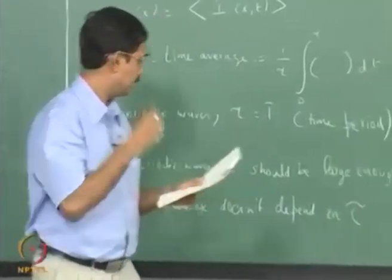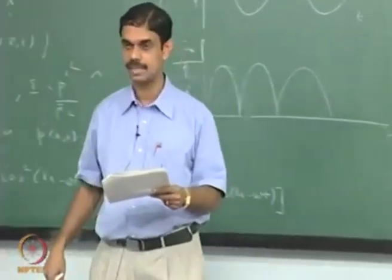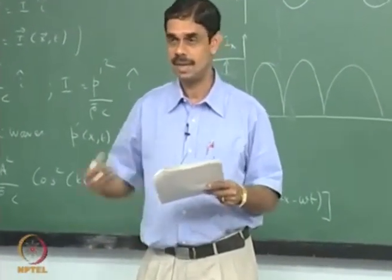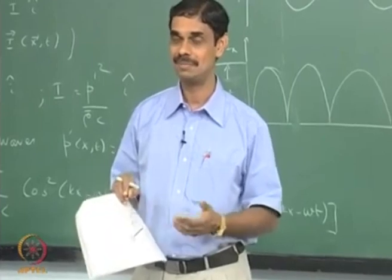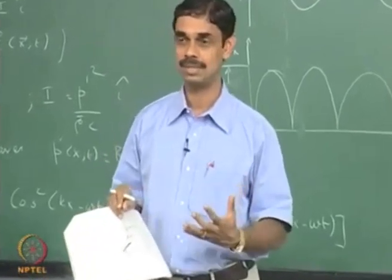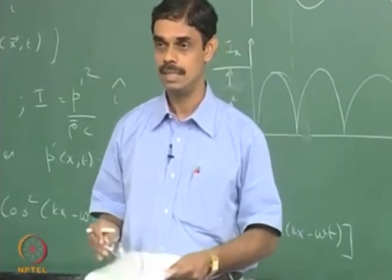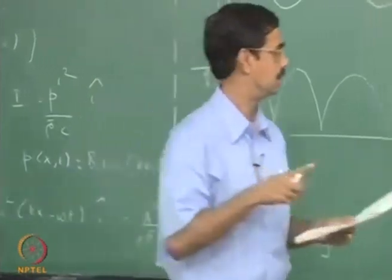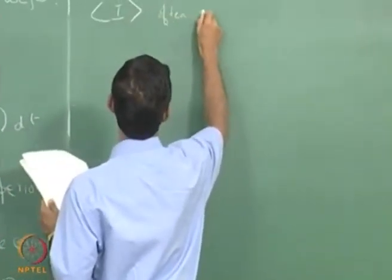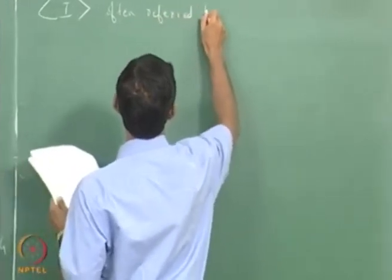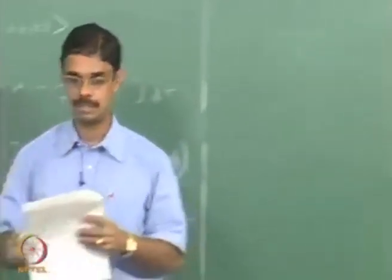Although the i with angle brackets is strictly speaking called the time-average acoustic intensity, in practice that is what is referred to as intensity itself. We drop the term 'time average,' but when people refer to acoustic intensity, most likely they mean the time-average acoustic intensity as used in engineering parlance. So this i often referred to as intensity would actually mean time-average intensity.